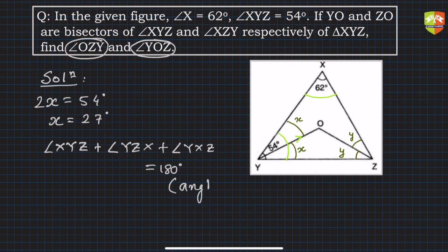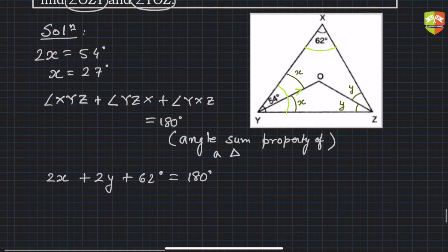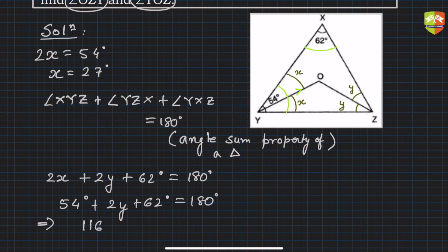So angle XYZ is 2x, angle YZX is 2y, and angle YXZ is 62 degrees, and this equals 180 degrees. So 2x we found out is 54 degrees, so 54 plus 2y plus 62 equals 180 degrees.